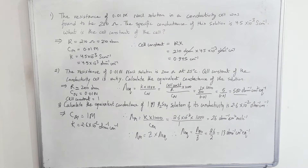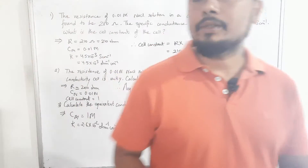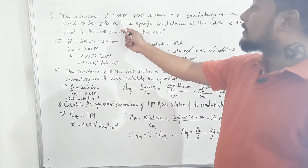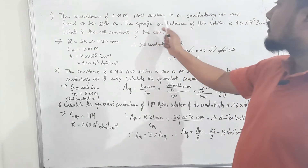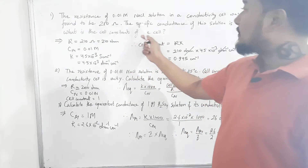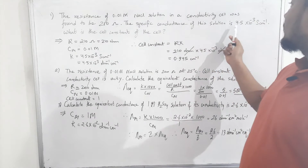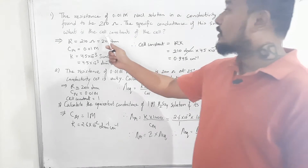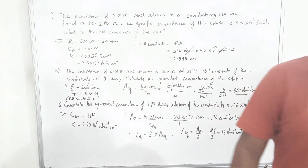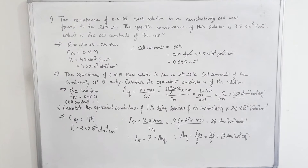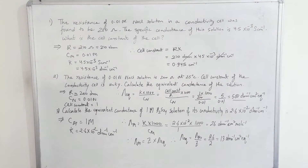You can see here the number one question we are going to do. The resistance of 0.01 N molarity NaCl solution in a conductivity cell was found to be 210 ohm. The specific conductance of this solution is 4.5×10⁻³ S cm⁻¹. Your job is to calculate the cell constant.